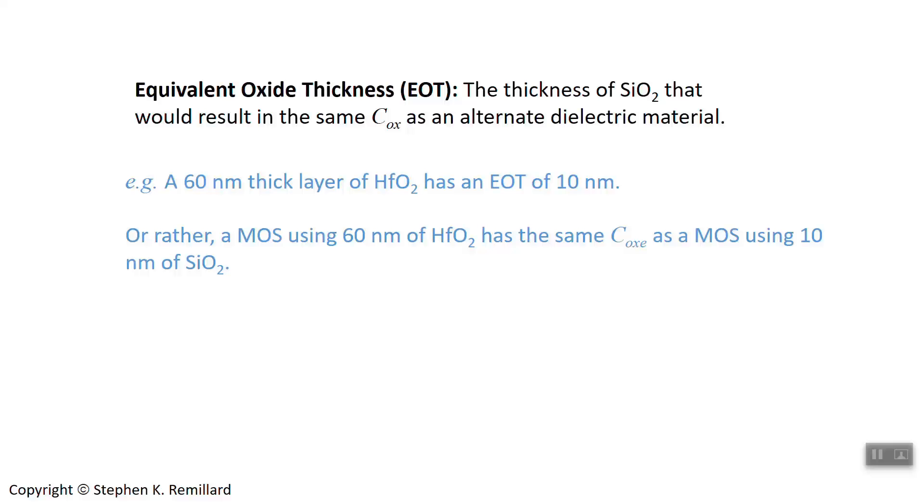A MOS structure using hafnia can be 60 nanometers and have the same capacitance as a silicon dioxide MOS structure that's only 10 nanometers thick.